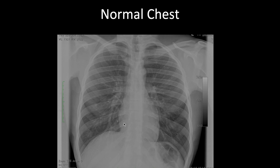Next, look at inspiratory effort. You want the lungs expanded as much as possible, achieved by a maximal inspiration breath-hold. This is evaluated by counting ribs — counting either posterior or anterior aspects of the ribs. Posteriorly, 9 to 11 ribs visible is adequate. Anteriorly, 5 to 8 ribs are adequate.